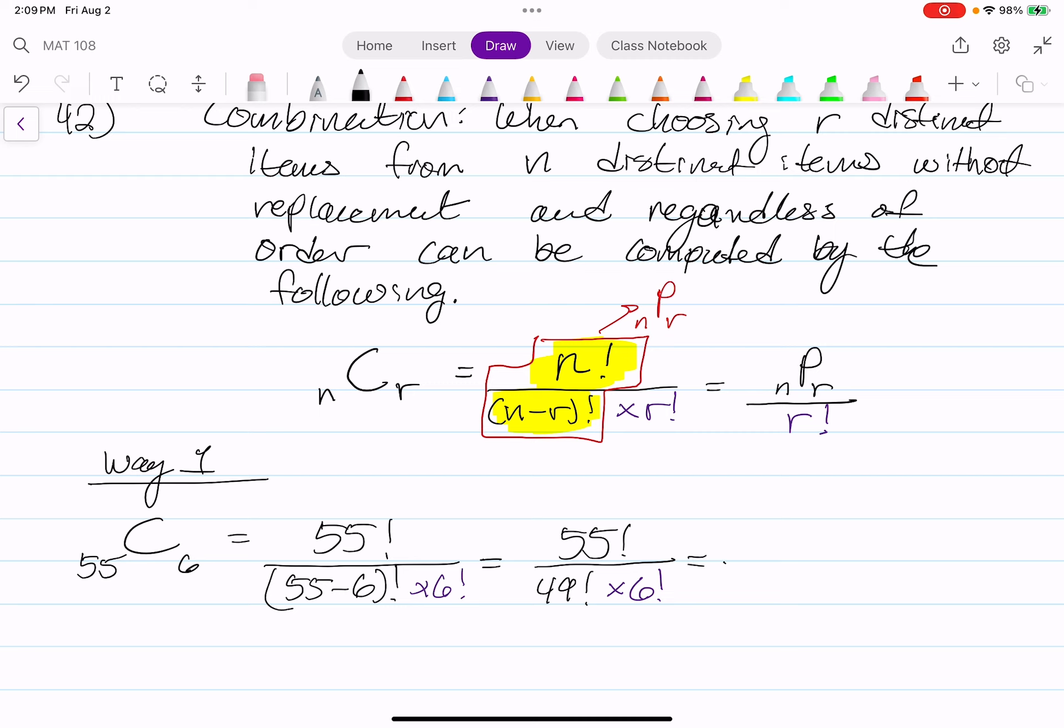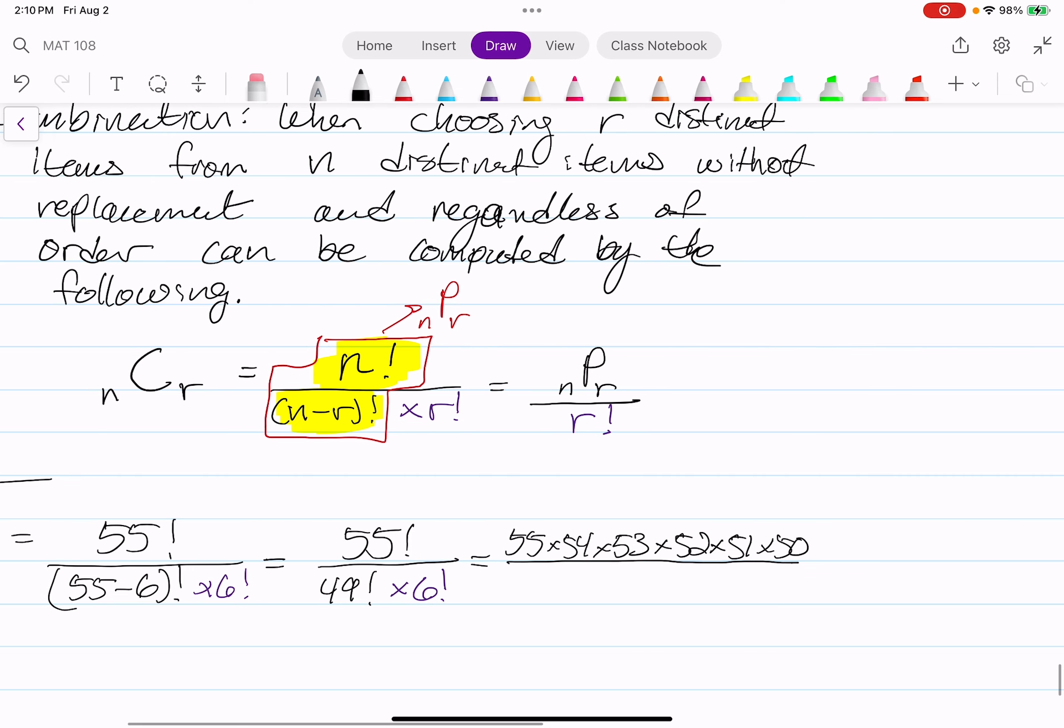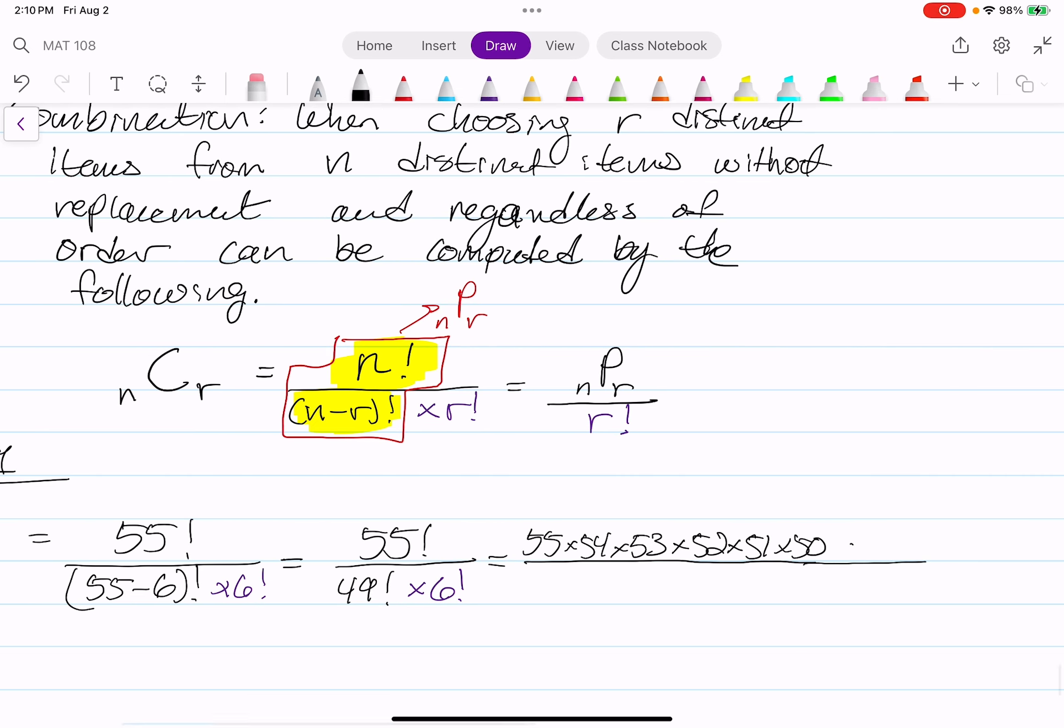So that's going to be 55 factorial divided by 49 factorial because 55 minus 6 is 49 times the other 6 factorial. Let the 6 just chill there. It's not bothering anybody. Let's expand 55 factorial until we reach 49 factorial like we did in the last video. 55 times 54 times 53 times 52 times 51 times 50 times stop here at 49 factorial because there's a 49 factorial already in our denominator and those two simplify each other out.